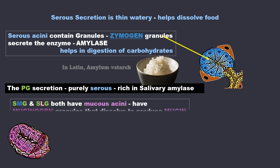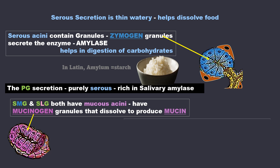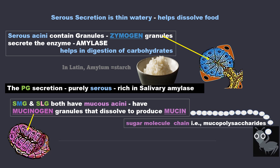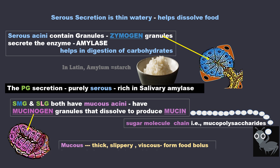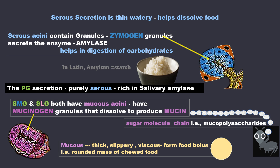The submandibular and sublingual glands both have mucous acini, and these have mucinogen granules that dissolve to produce mucin. Mucin is made of long chains of sugar molecules which we call mucopolysaccharides. The mucus produced is thick, slippery and viscous and helps to form a food bolus — that is, a rounded mass of chewed food.